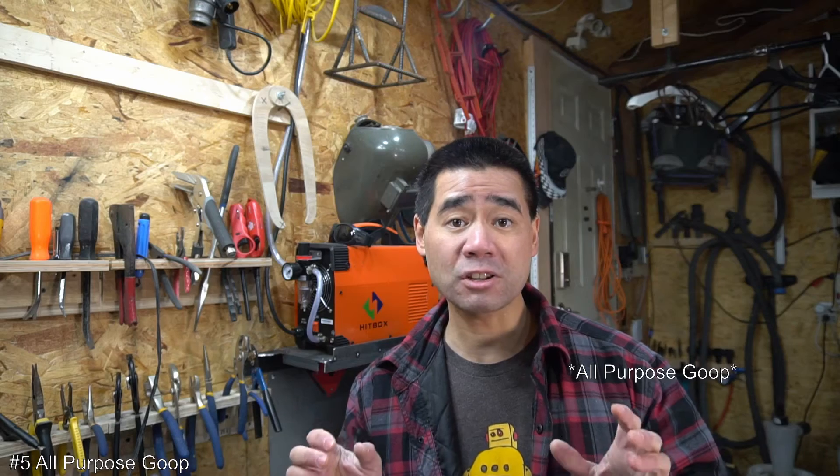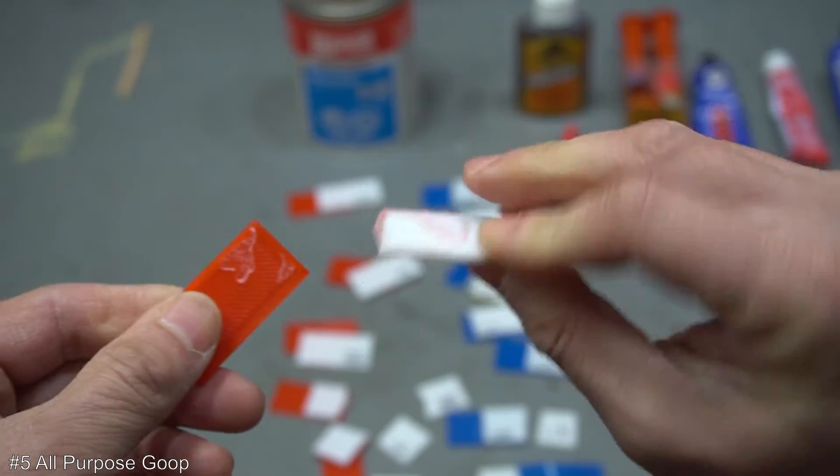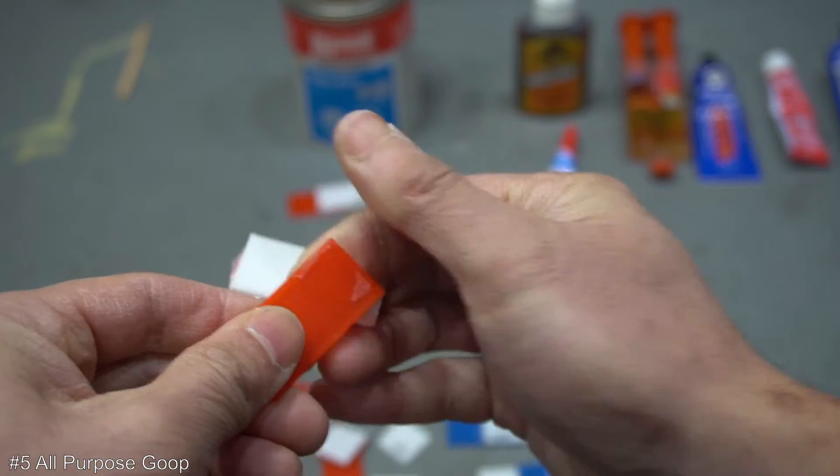Coming in in the number five position, all purpose goop. This glue actually held about the same as the plastic model cement, but it seemed to flex a bit and peeled off the PLA. So I'm giving it a lower ranking than the model cement.